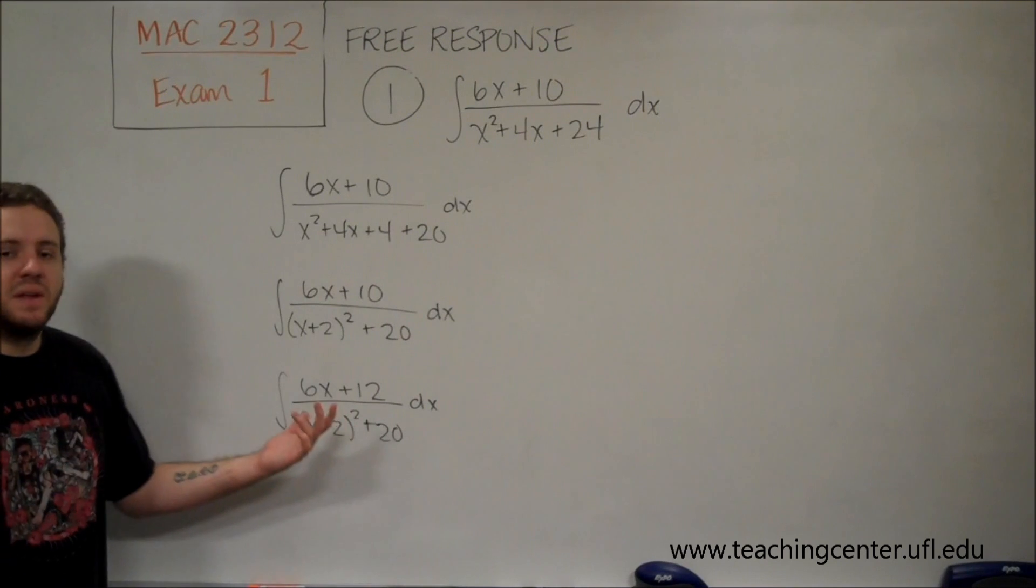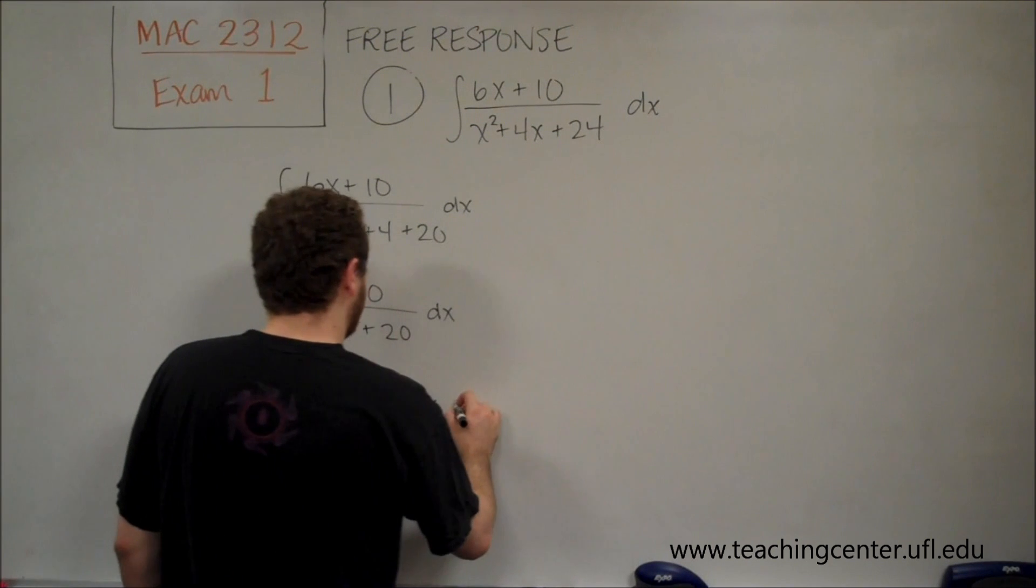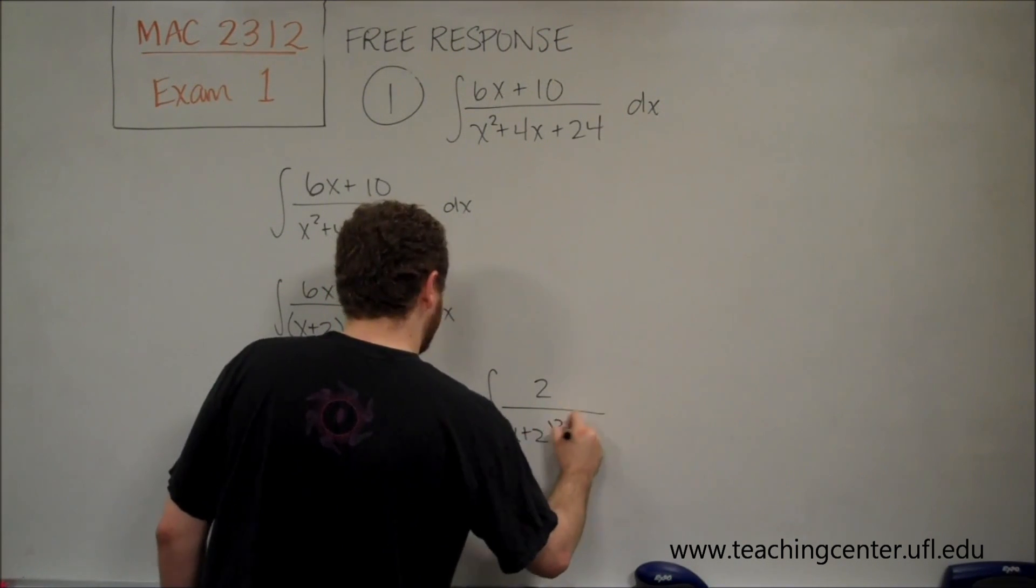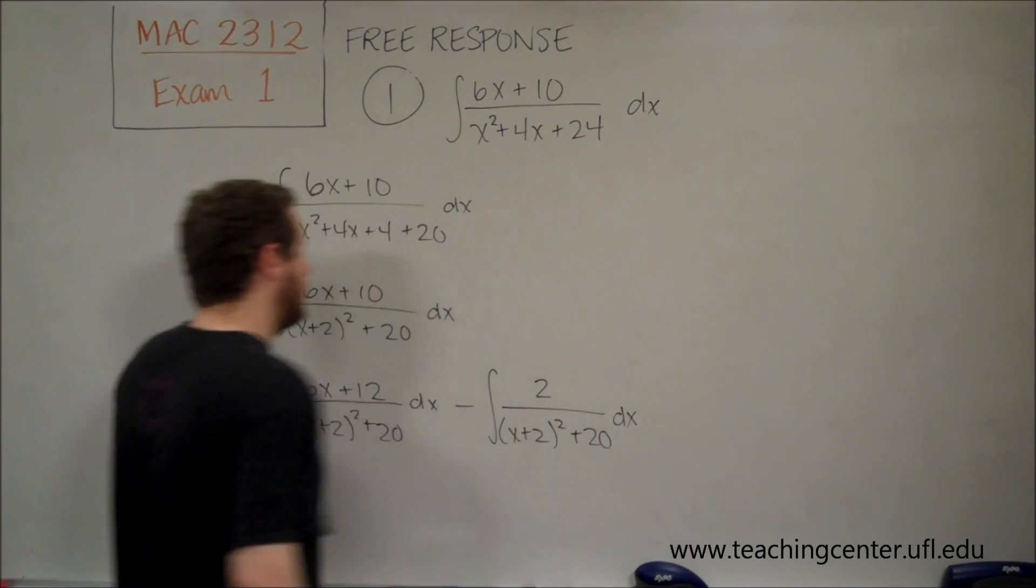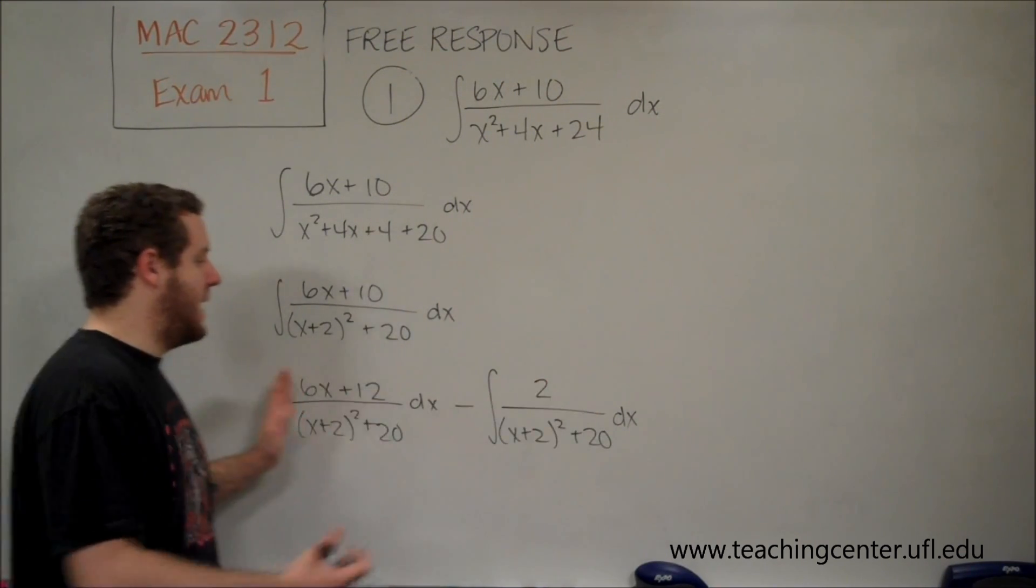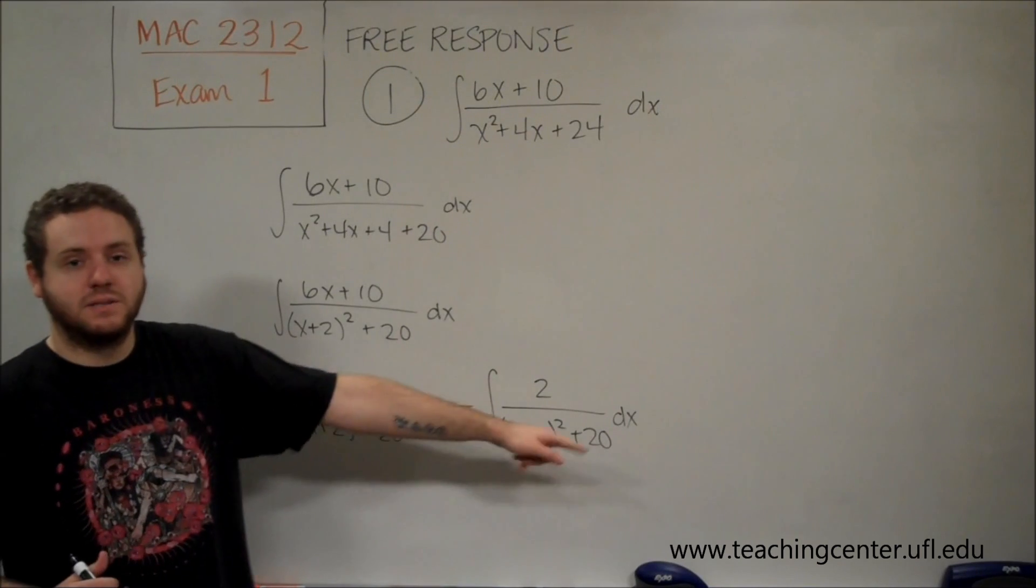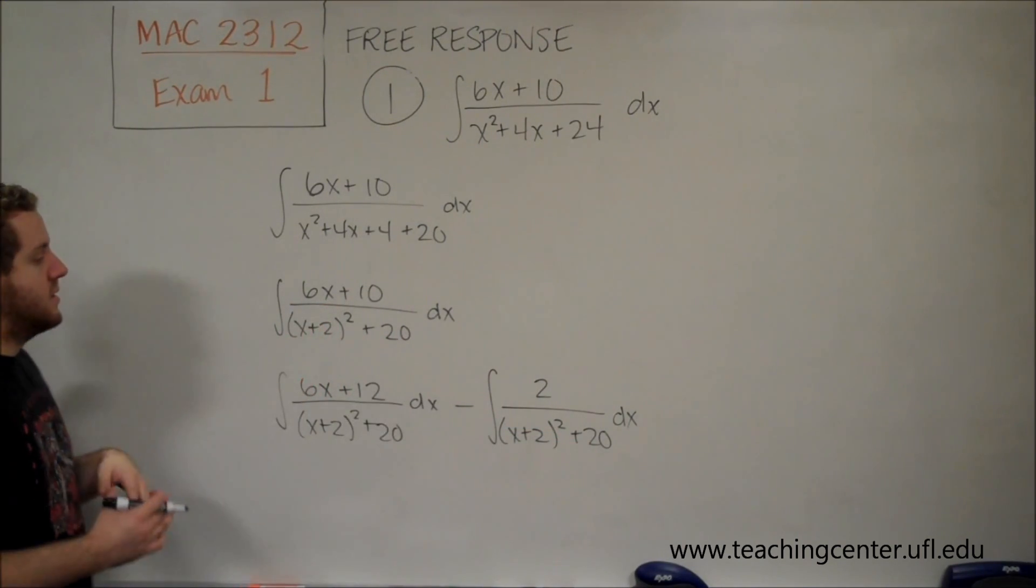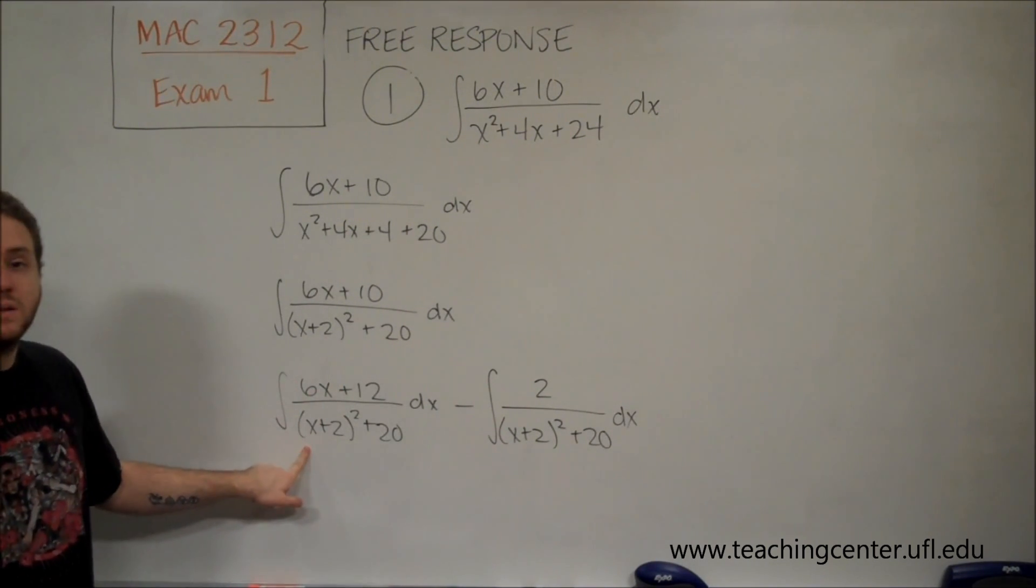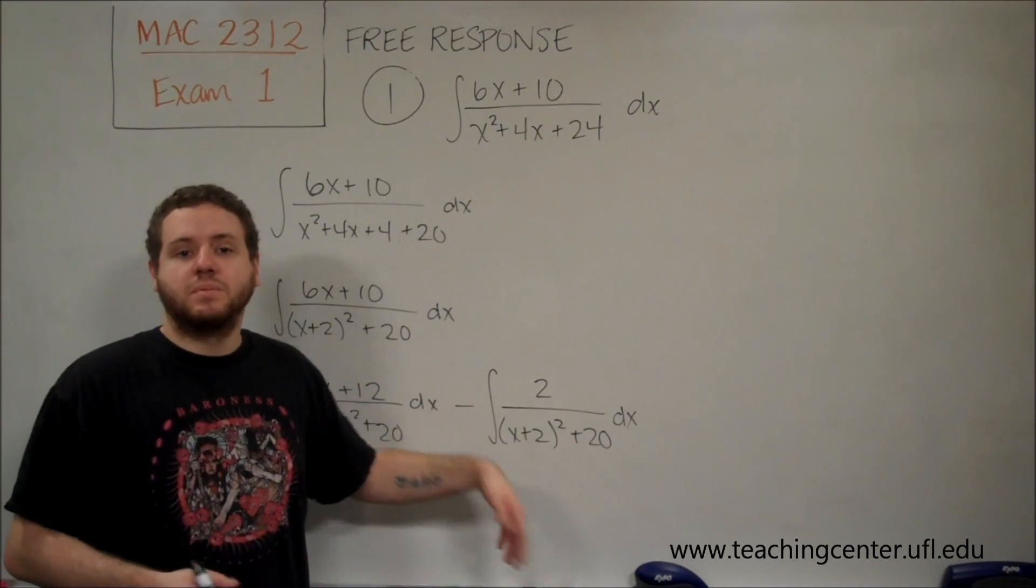Okay, but you can't just change 10 to 12 because you feel like it. We added 2 from the numerator, so we would have to subtract 2. And we could do that by putting it over the same denominator. So keep in mind, just to verify to yourself, if I put these back together and subtracted them, they have the common denominator, so you could just put that back. We'd get 6x plus 12 minus 2, which is 6x plus 10. So the reason I split it like this is because now this part will work out to be a perfect ln, because our numerator is a multiple of the derivative of the denominator.